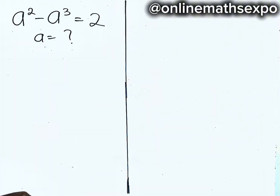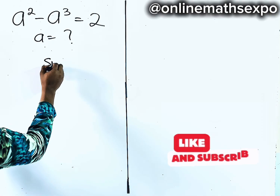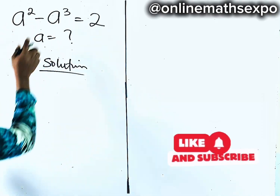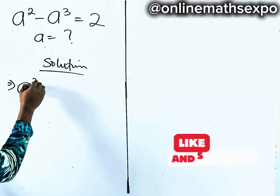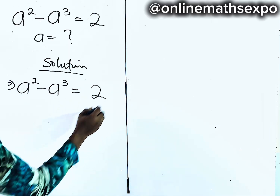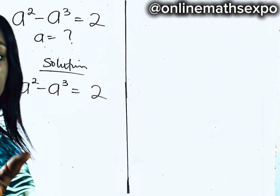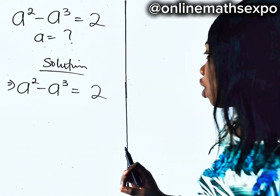It's just so easy. Let's do this together. So we're going to begin with our solution. Let's repeat what we have: A squared minus A cubed is equal to 2. Now, we're going to use the factor method.